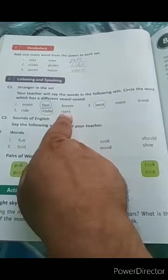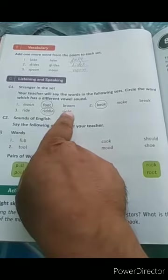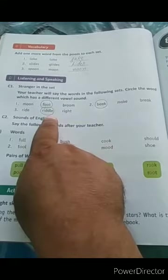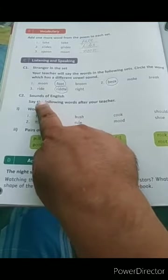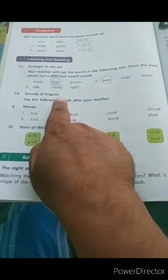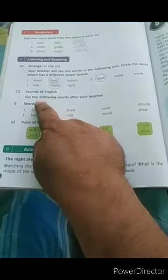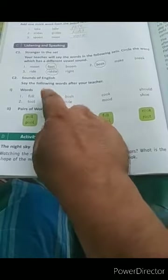Third, riddle, right. Ride and right are both one sound and riddle is a different sound. So riddle is a different sound, we will circle it. Now see, C2 is the sound of English.